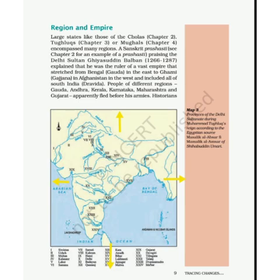19th Gujarat, 20th Devagiri, 21st Telingana, 22nd Talanji, 23rd Dwarasamudra, 24th Mabar. So these are the old states under the Delhi Sultanate.